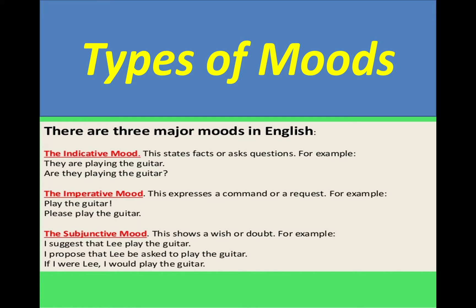'If I were Lee, I would play the guitar.' Here we say 'were' not 'was'. Because it is a kind of conditional sentence but in subjunctive mood we follow the subjunctive rule, not the standard third person singular rule. So there are three kinds of moods.